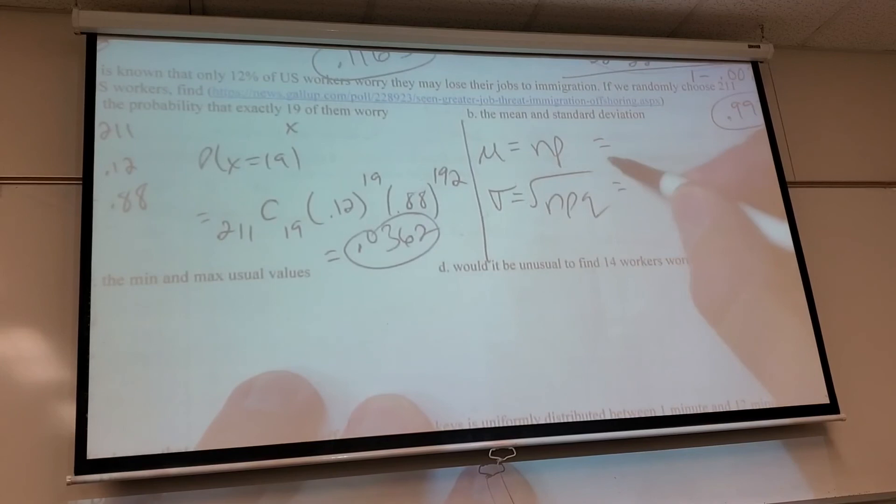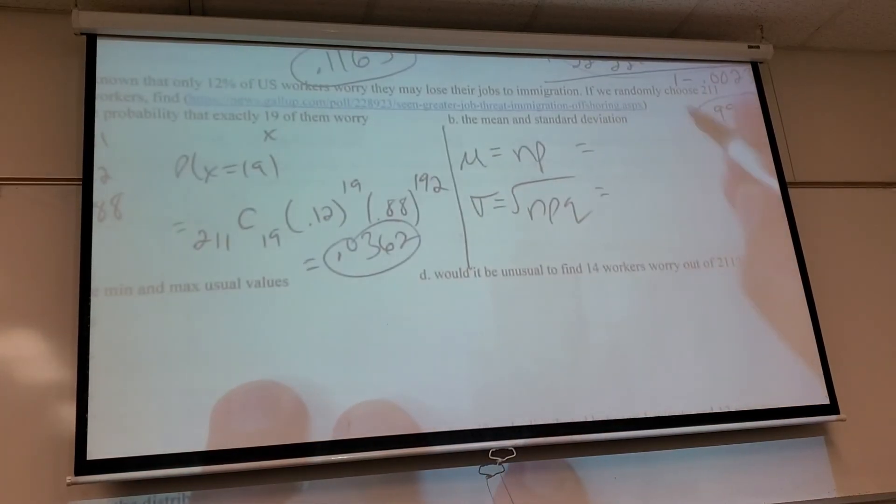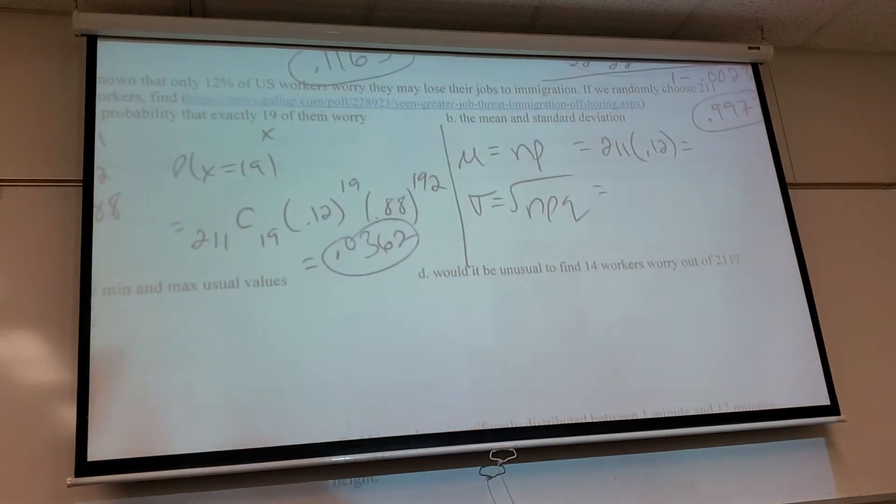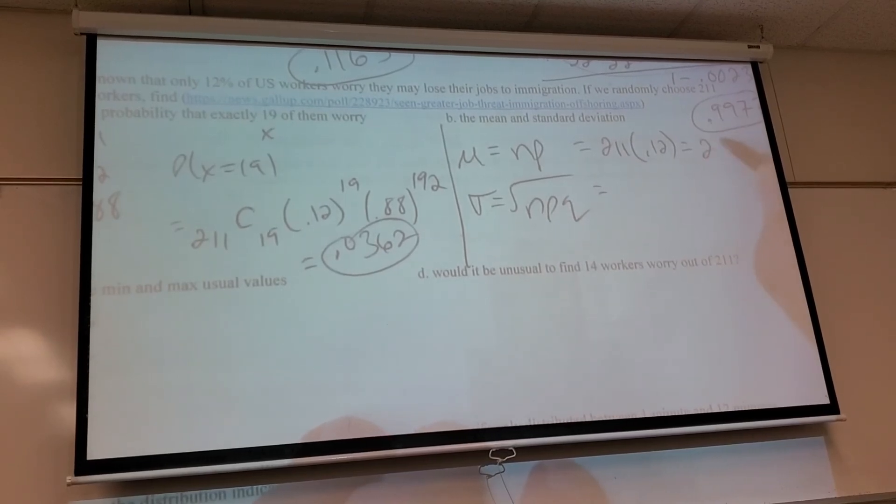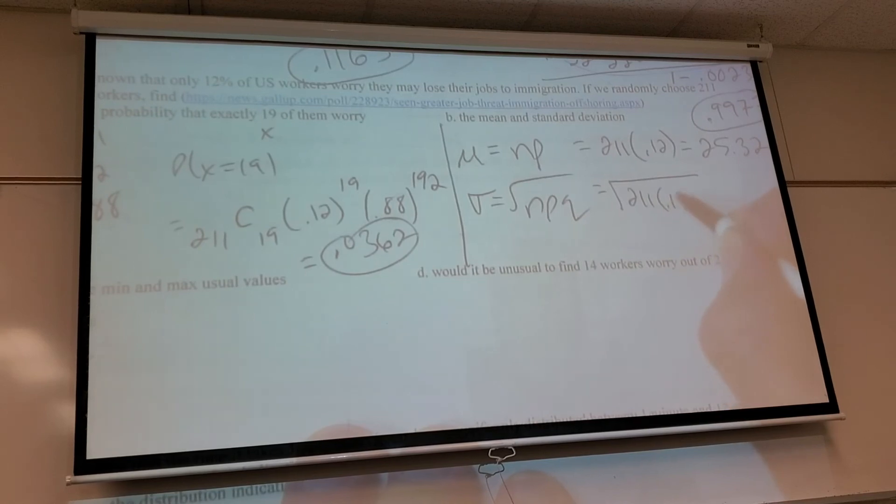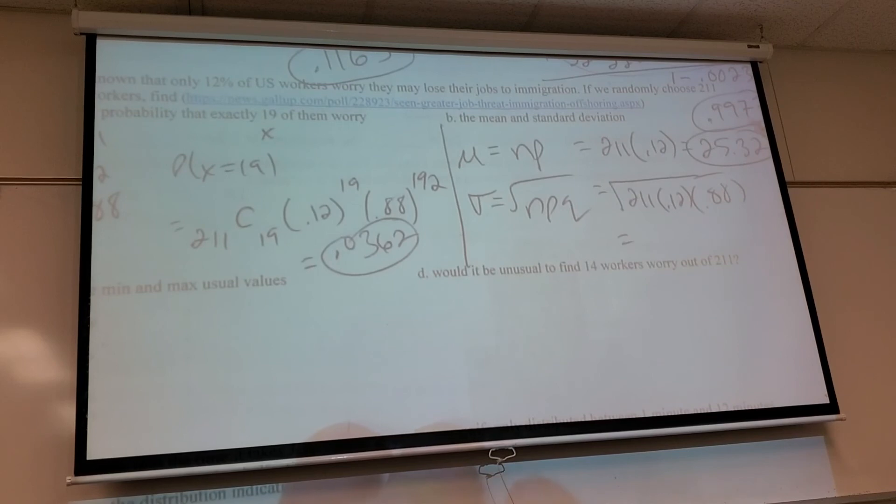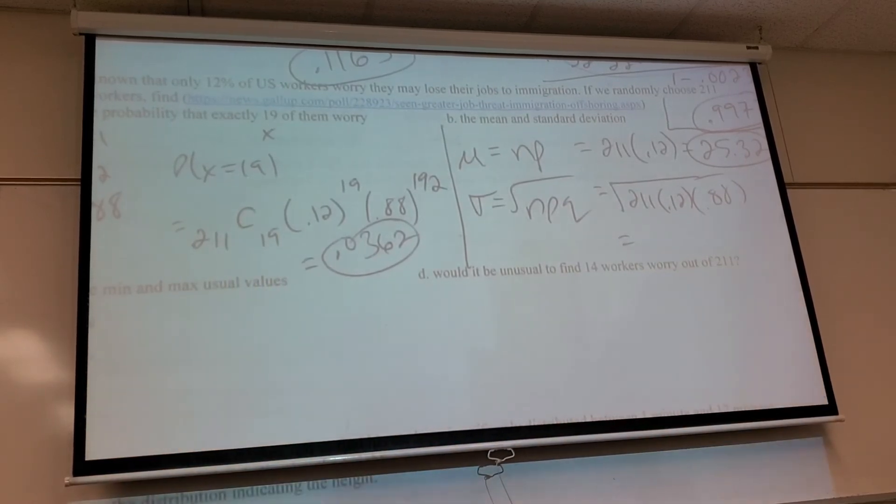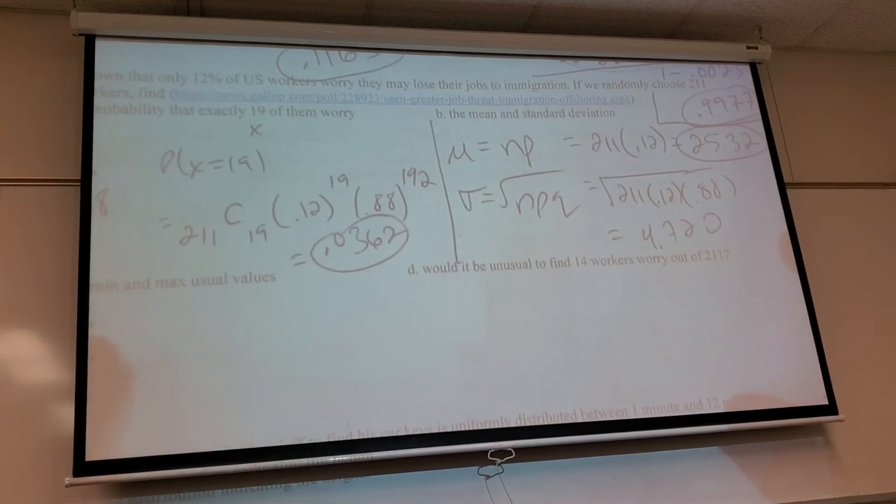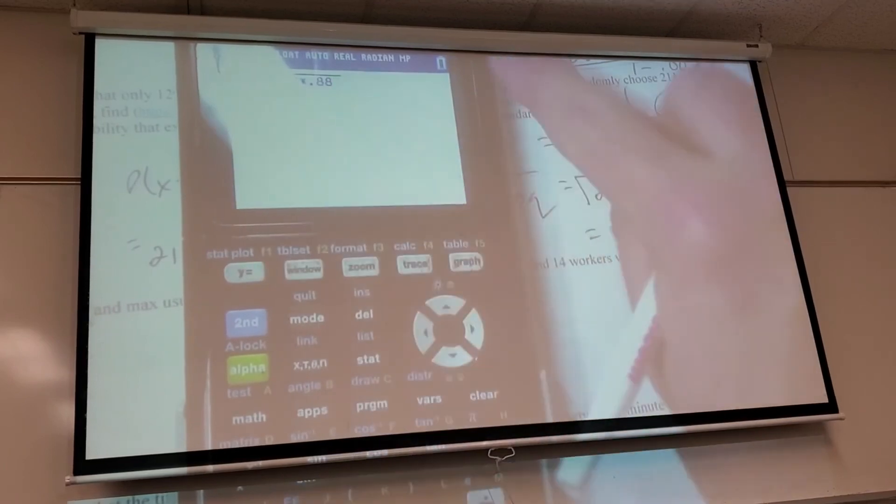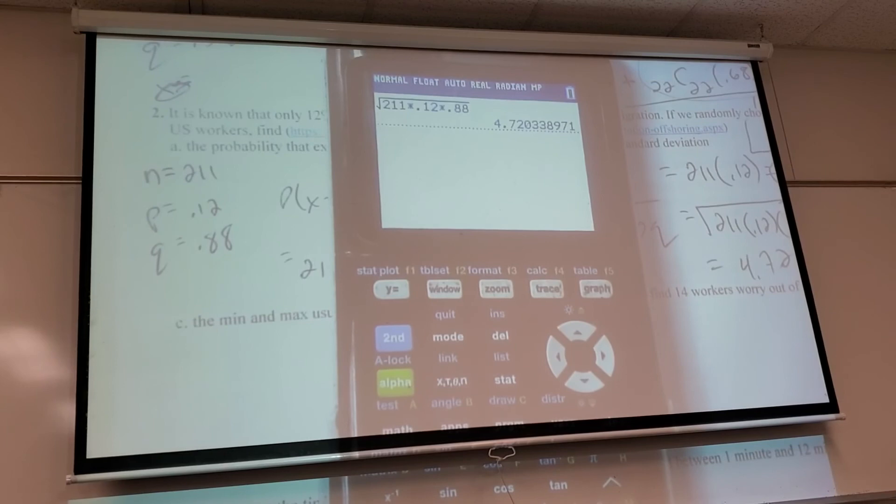Now I can figure out the expected number of workers that would worry about this. That would be n times p. What do you guys get for that? 26.52. So 211 times 0.12, right? And this will be square root of 211 times 0.12 times 0.88. Make sure the whole thing is under the square root symbol. So what do you guys get for that? 4.720.